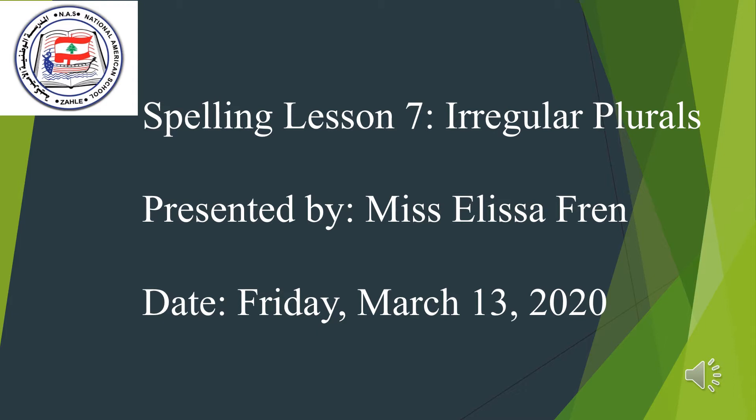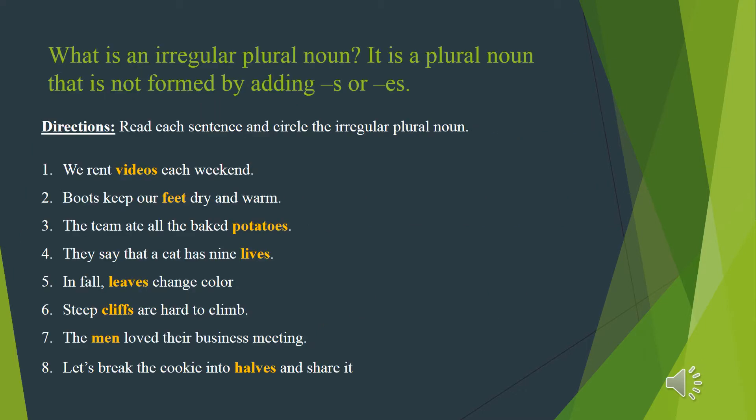Today's objective is to acquire the irregular plurals. What is an irregular plural noun? It is a plural noun that is not formed by adding S or ES. This means that when you change the word from singular to plural, the whole word changes.